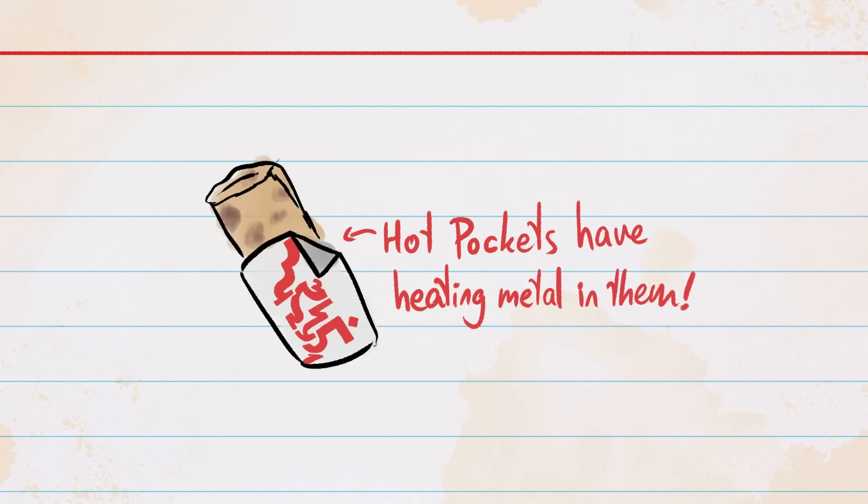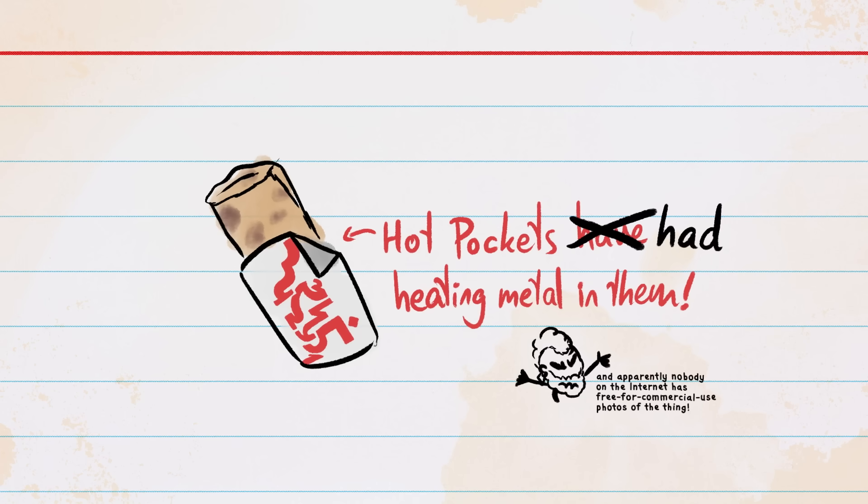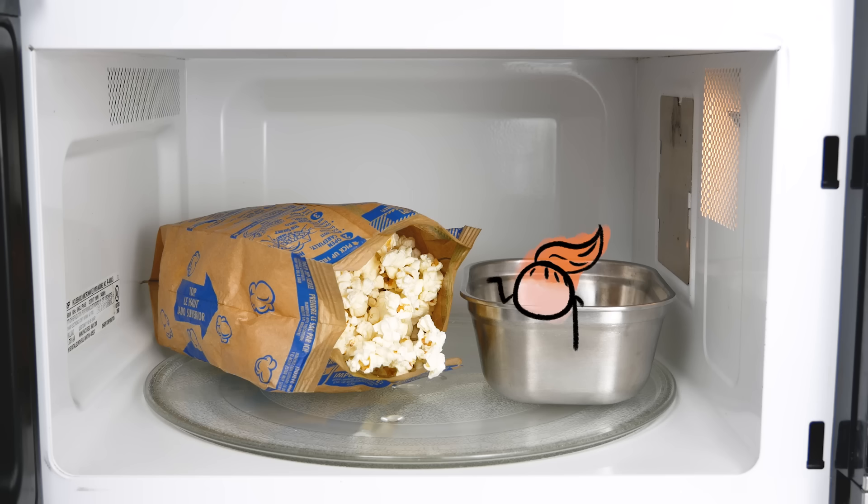The most ubiquitous example of this strategy, the crisping sleeve of a hot pocket, is now, sadly, a thing of the past. Anyway, the point is that none of these metal-containing products are bad news in your microwave. So when is metal a problem? And when isn't it?